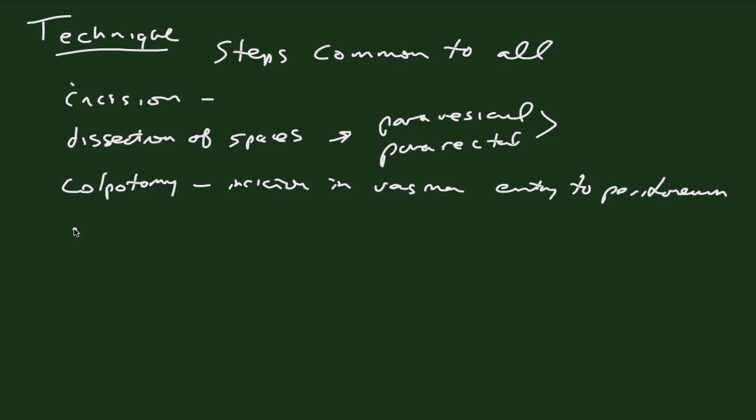All right, and so moving up from the colpotomy, we would then divide and ligate the uterosacral ligaments. Uterosacral, obviously, connecting the uterus to the posterior pelvis. These provide a lot of support for the uterus, and it's important that when these are ligated, that we try to damage them as little as possible, because this is how we can then go back later at the conclusion of the vaginal case and suspend our vaginal cuff to try to prevent a prolapse of the vaginal apex and formation of enteroceles.